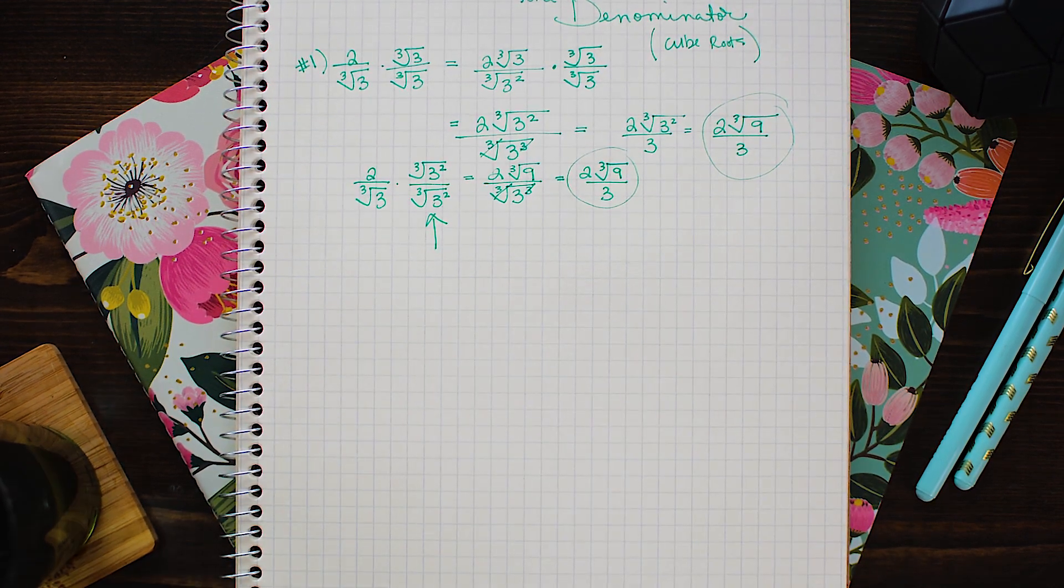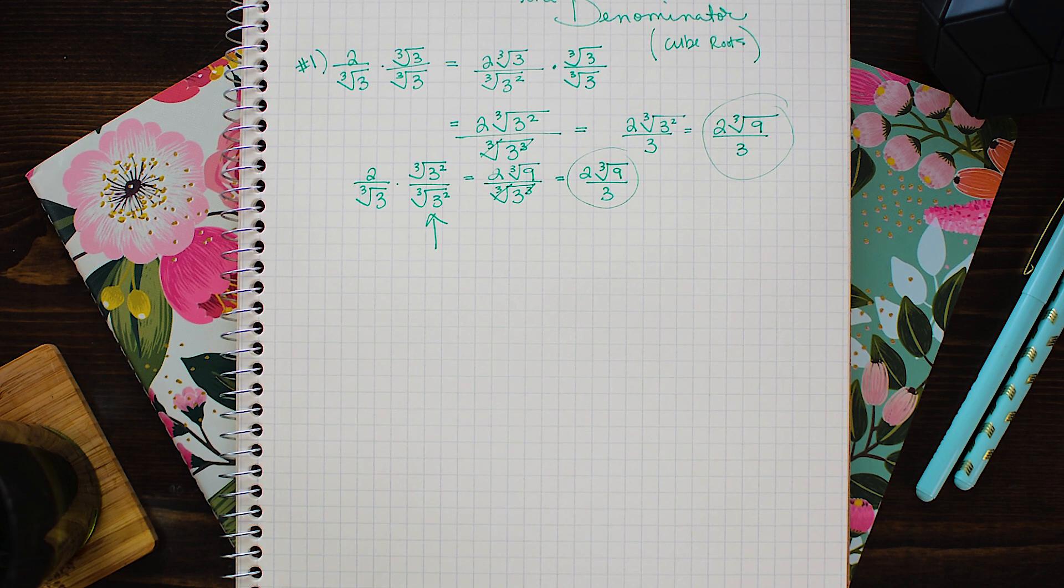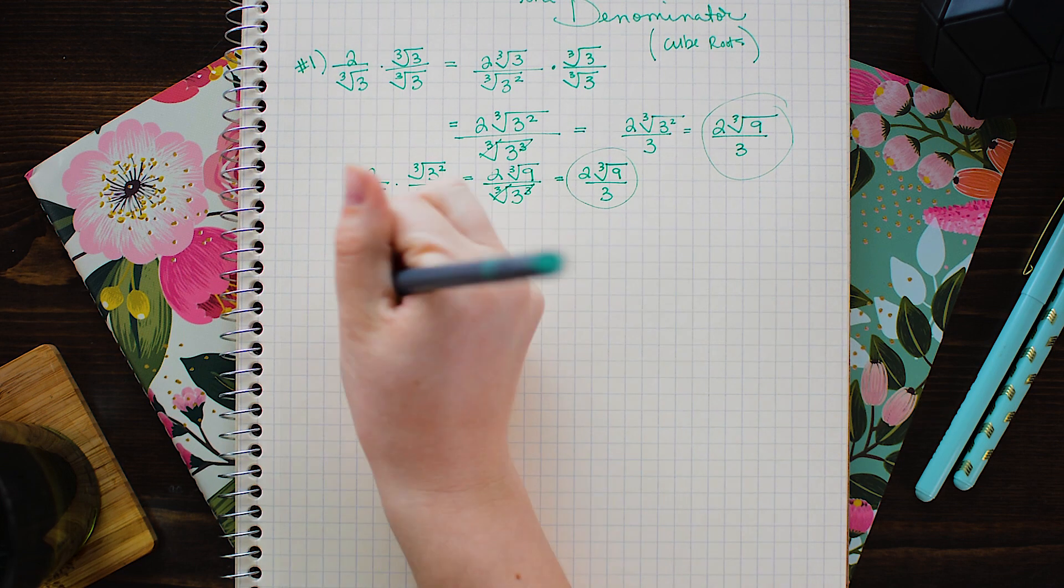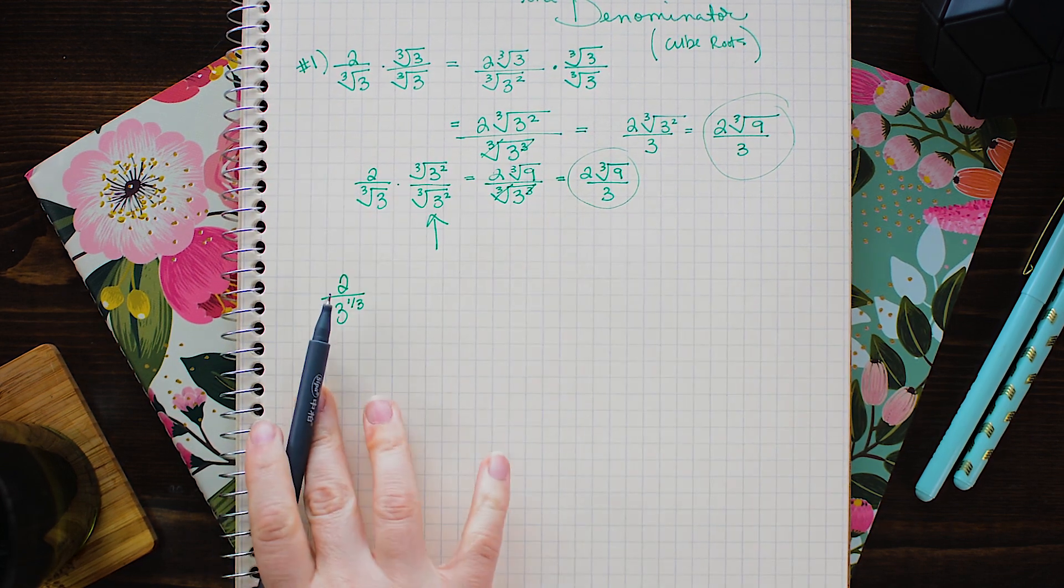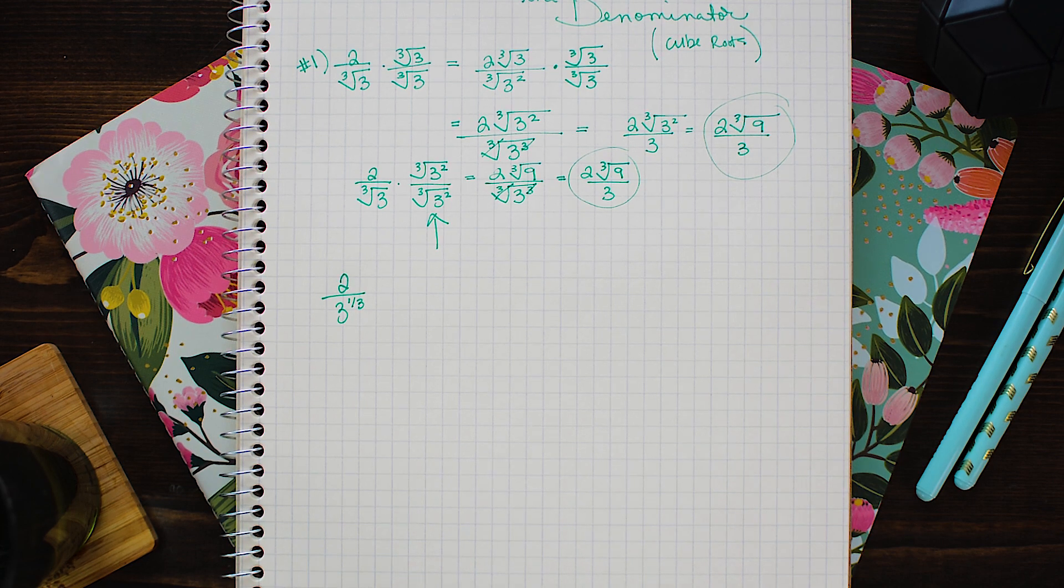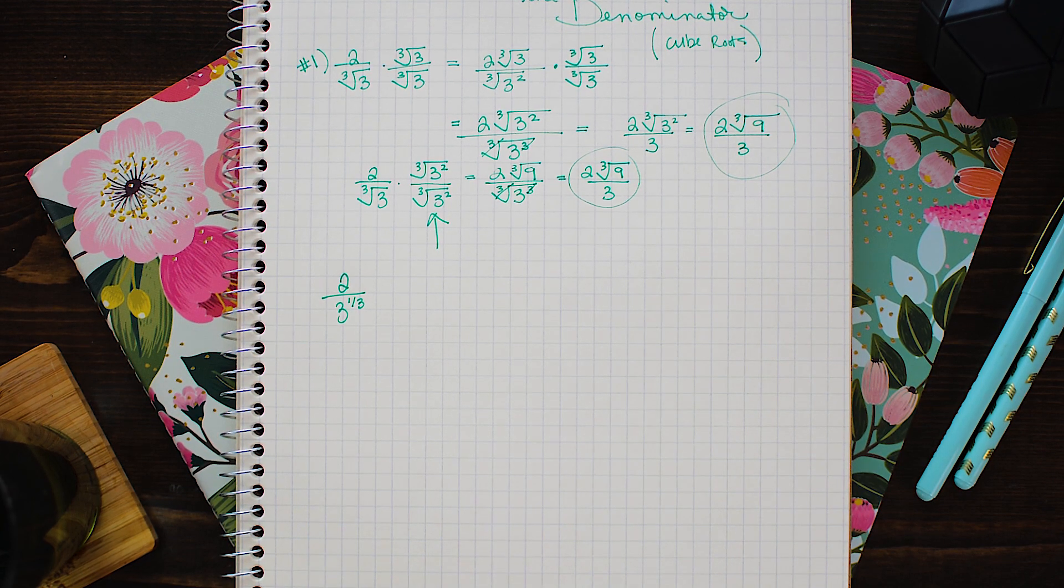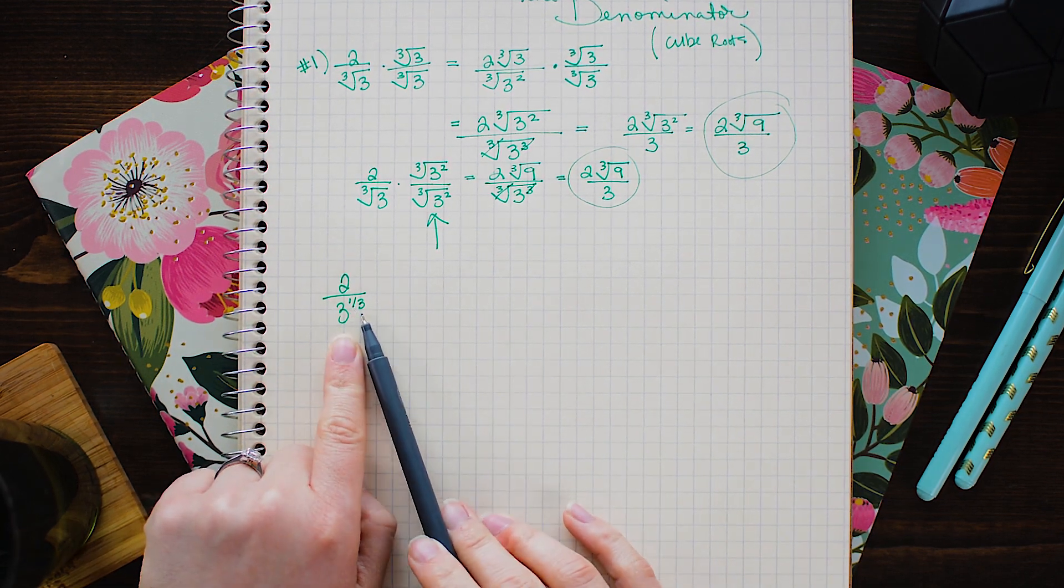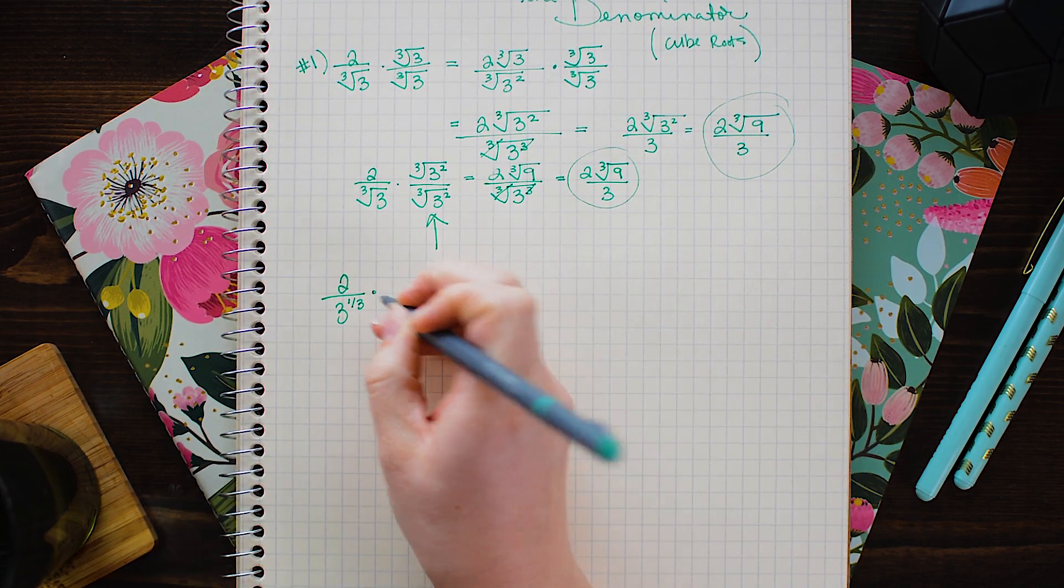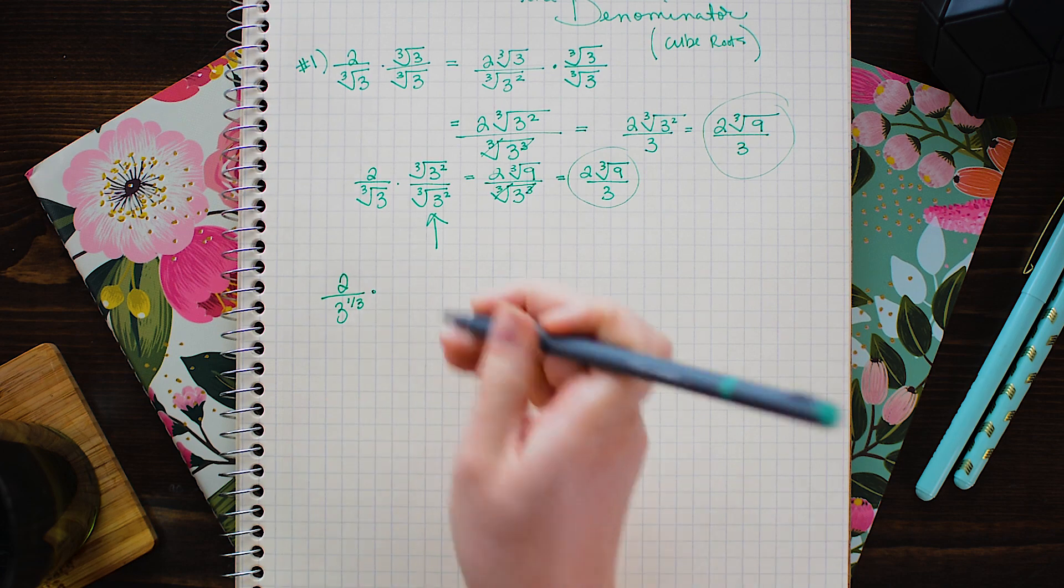So this is where working with the alternate notation is really handy. 2 over cube root 3 is the same as 2 over 3 to the 1 third. Because we can rewrite cube roots as 1 third powers. And now it's a little more obvious what we need to get rid of the fractional exponent.